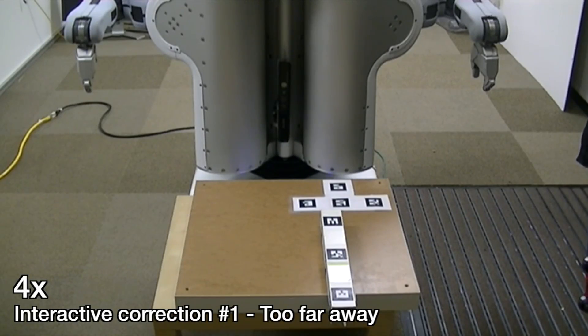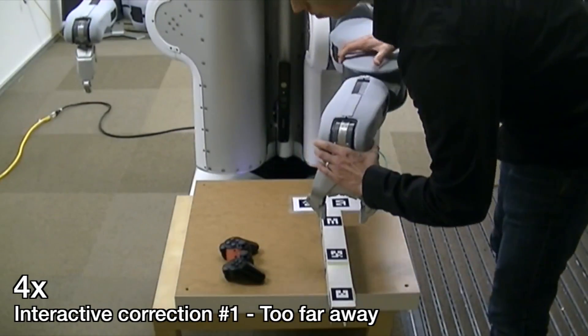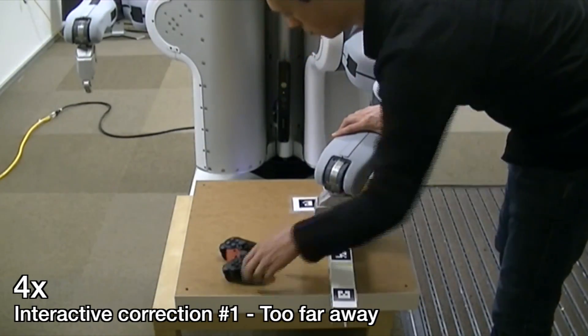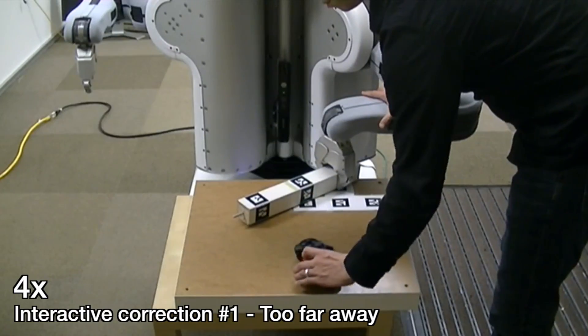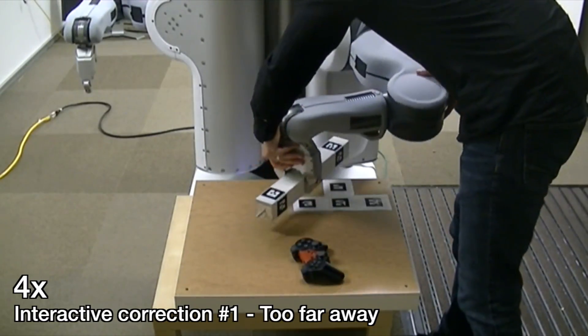However, during replay, various contingencies can be encountered. Here, the table leg is too far away for the robot to grasp it at the desired position. The user provides an interactive correction, showing the robot how to grasp it at a closer location, bring it toward itself, and then re-grasp it at the desired location.